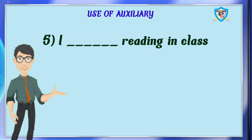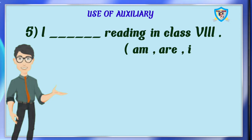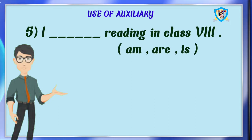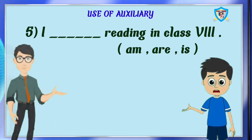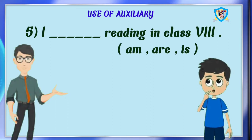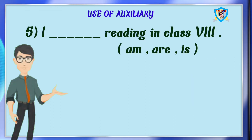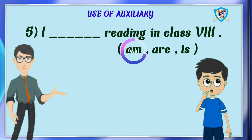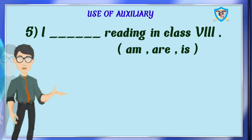Question 5: I dash reading in class 8. Options are am, are, is. Who can say the right answer? The answer is is. No, it is wrong. Here the subject is I, and we have to use am. I am reading in class 8. It is in present continuous.